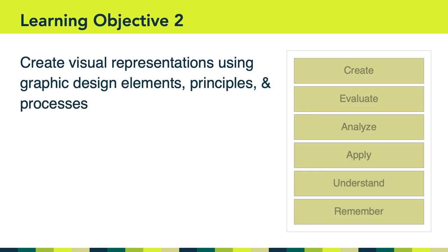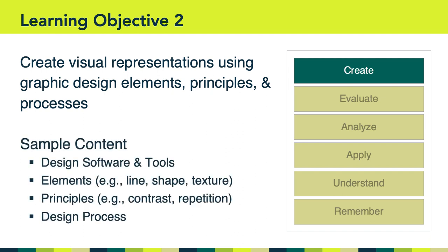Our second learning objective states that we're going to create visual representations using graphic design elements, principles, and processes — notice the emphasis on the create aspect of Bloom's taxonomy. We'll learn to use design software and tools, different design elements such as line, shape, and texture, different design principles such as contrast and repetition, and we'll spend considerable time learning about the process of design and how to iterate through a design project from beginning to end.